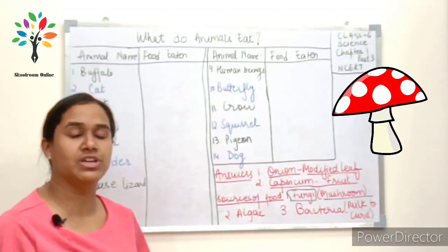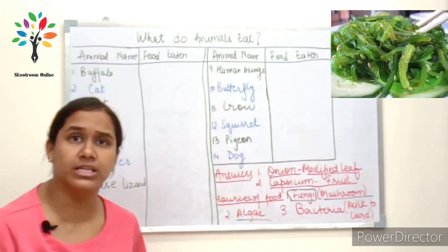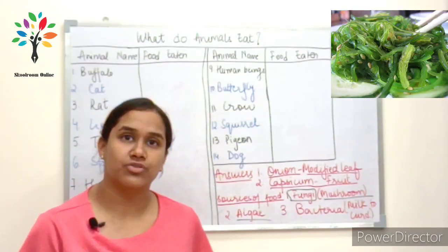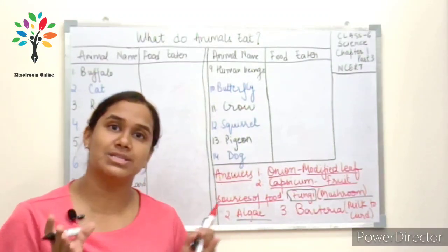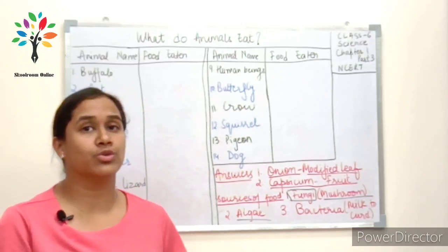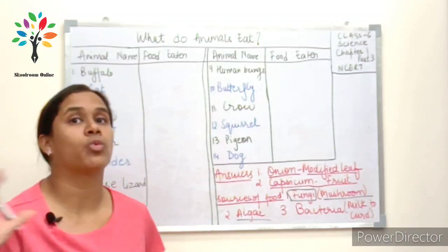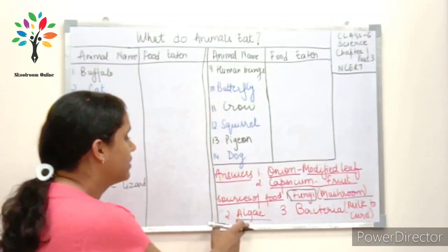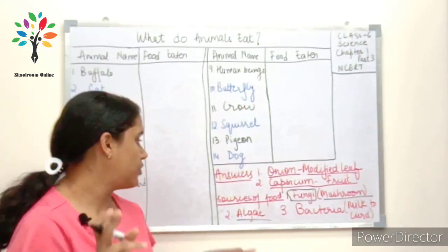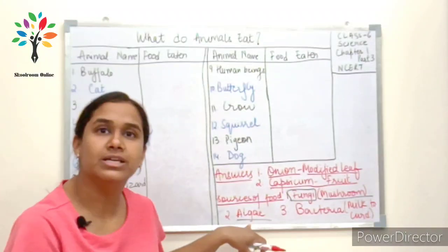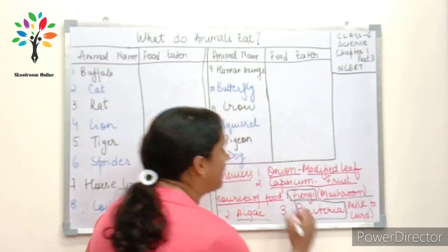The second source is algae. Algae is eaten in countries or places near coastlines, near the sea, because algae grows profusely in water bodies. One example of a country where algae is eaten is Japan.